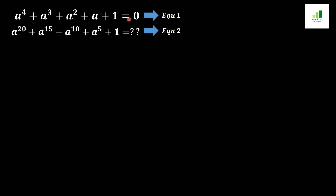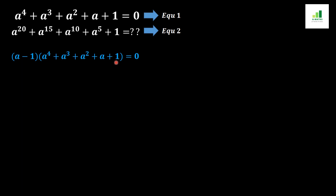We will solve equation 1 in order to evaluate equation 2. In the first step we multiply both sides of equation 1 by (a minus 1). As a result, the left side becomes (a minus 1) times (a to the power 4 plus a cubed plus a squared plus a plus 1), and the right side becomes 0.